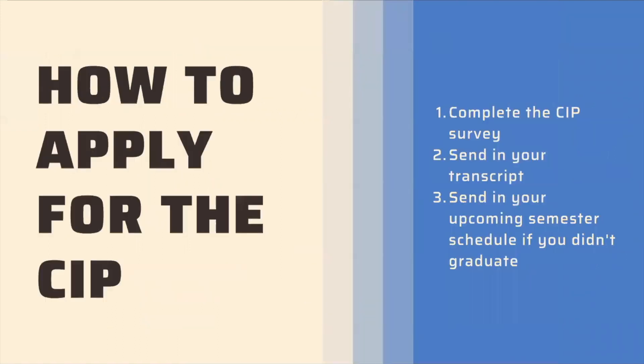So how do you apply for the CIP? You complete the CIP survey, which will be sent to you via email or text message. It has various questions on the college you attend, the major that you're studying, what address you'd like the check to be sent, and so on. Next, you will send in your transcript, which will be official or unofficial, which we'll talk about next. And then last, you will send in your upcoming semester schedule if you did not graduate. If you did graduate, your transcript would reflect that you have graduated and finished your degree program.